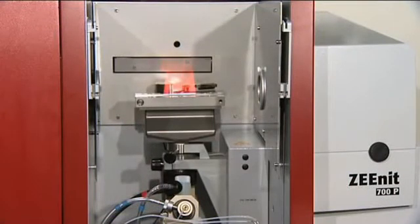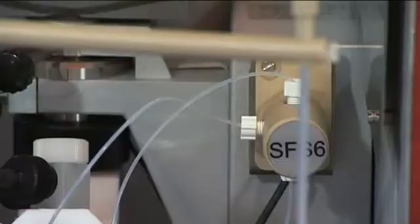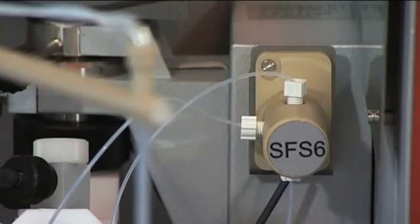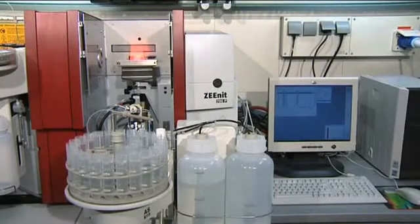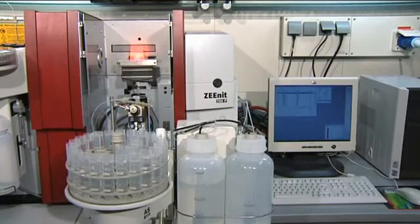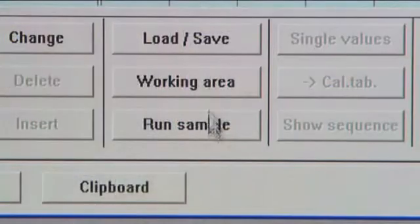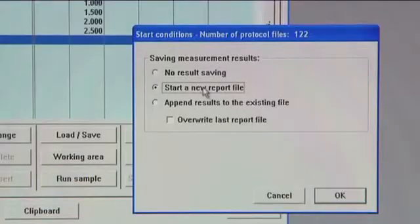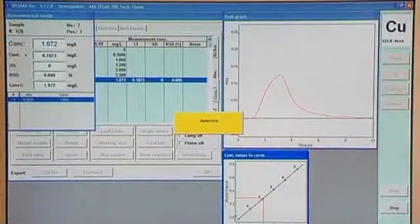By using an injection switch, this system is flushed continuously between sample measurements. This prevents entrainment effects and ensures uniform flame conditions. Smaller sample volumes of a few milliliters can be processed with the help of the injection technique.